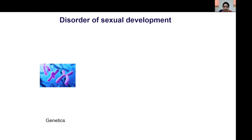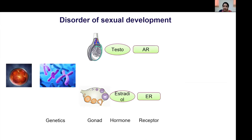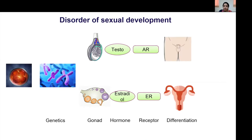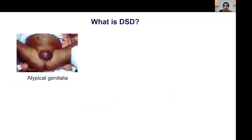Coming back to the fundamentals of sexual development: under the influence of genetics, a unicellular cell develops into either a testis or ovary. The gonads then produce testosterone or estrogen, which act on androgen and estrogen receptors respectively, helping in the development of external and internal genitalia and ultimately determining gender identity. Any discrepancy in external appearance and genetic sex is what is known as a disorder of sexual development.